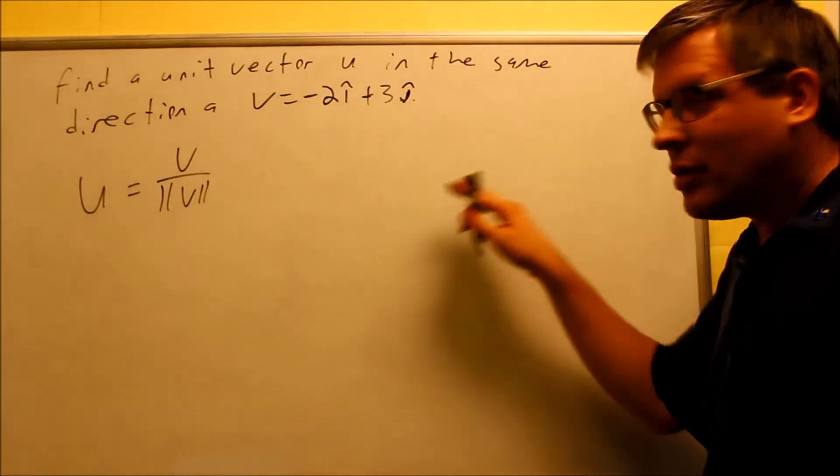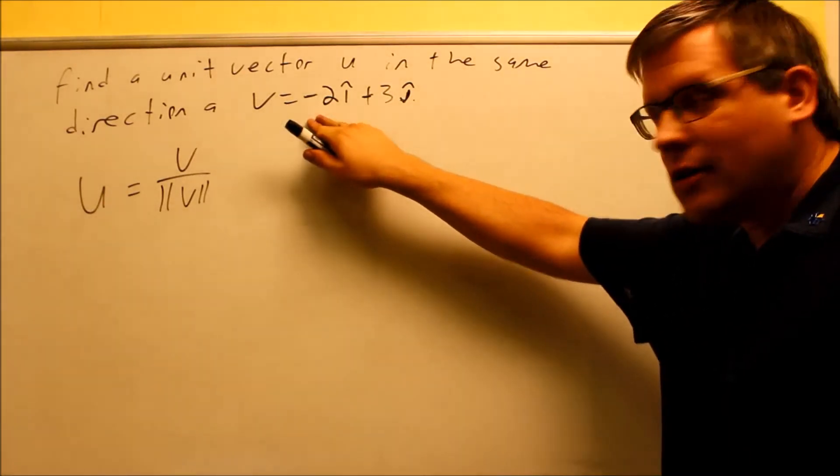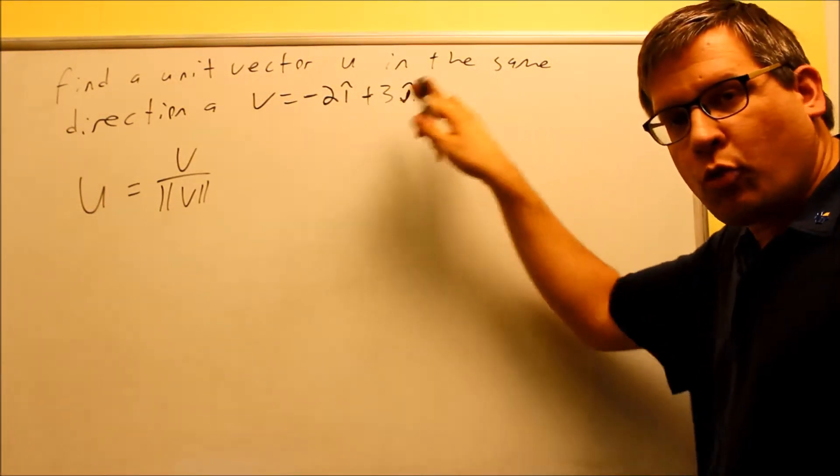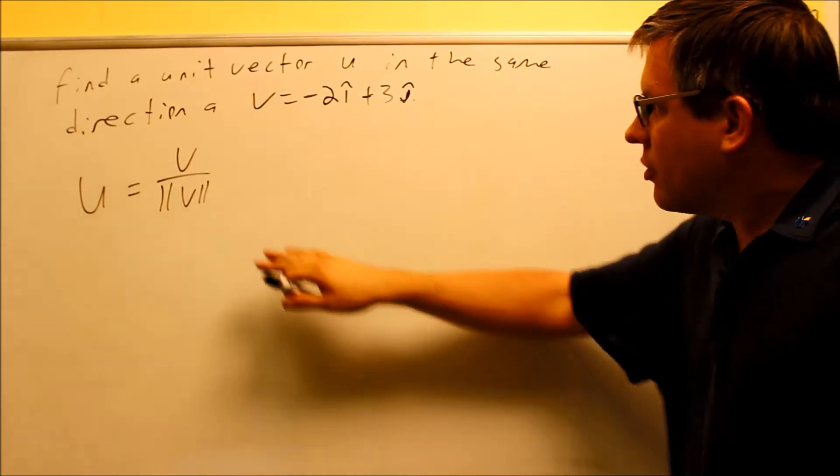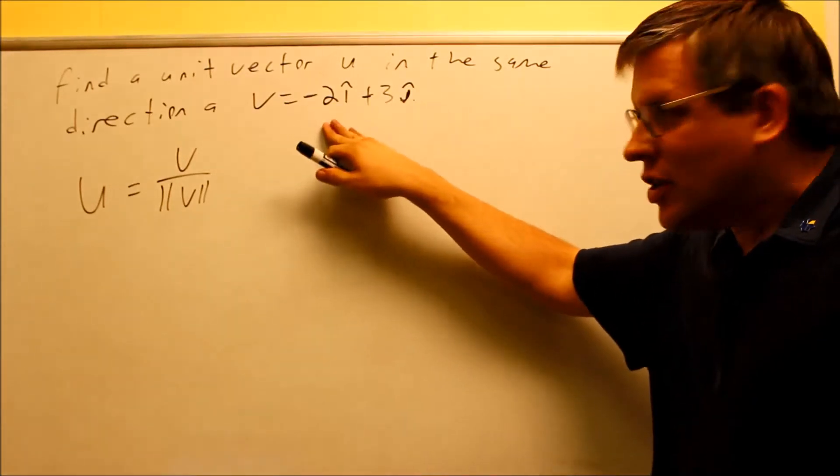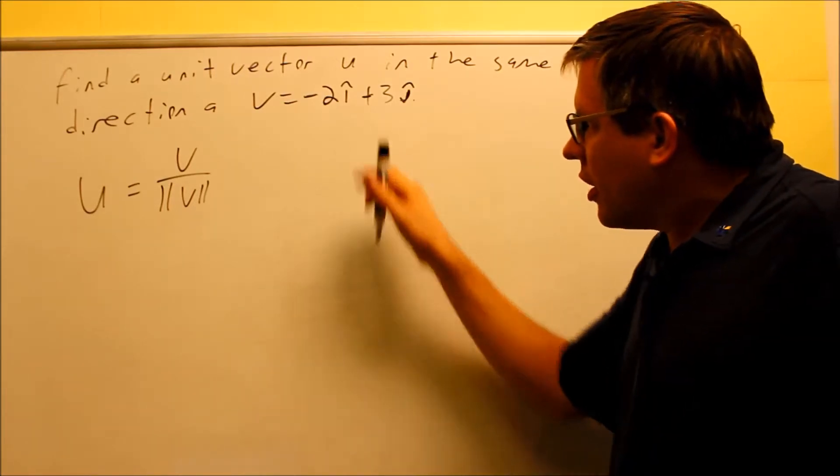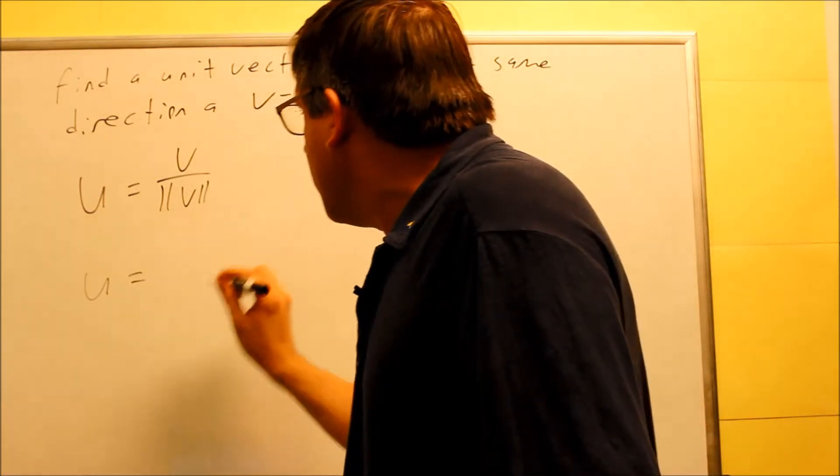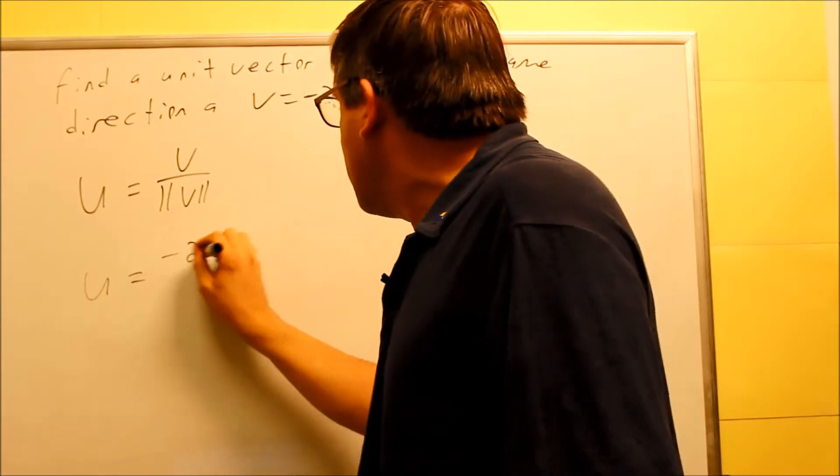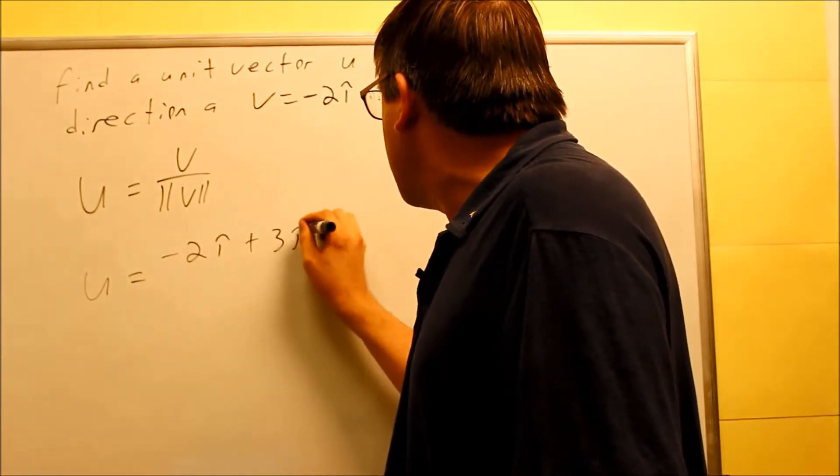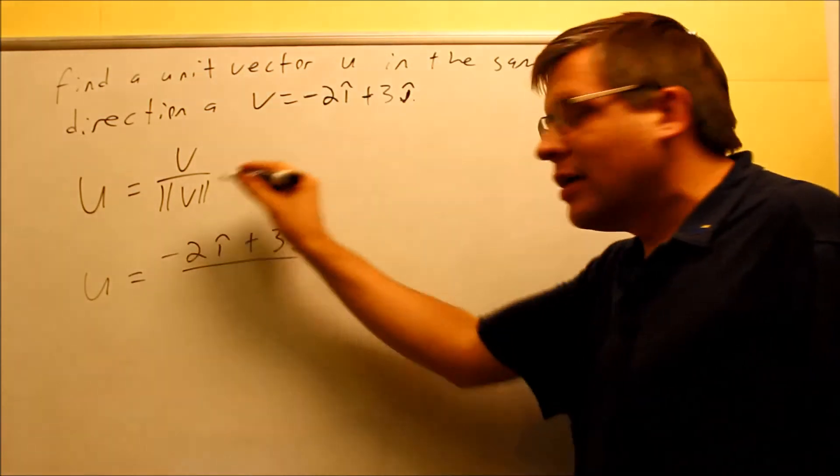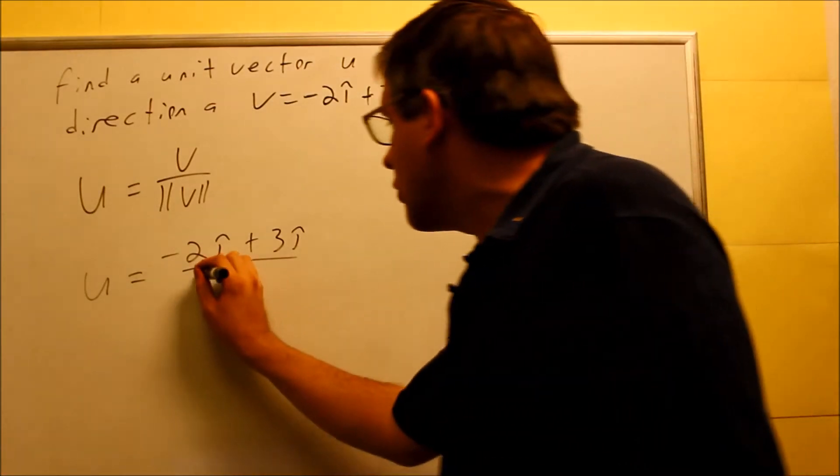Okay, here's the other example. Now we have negative 2I plus 3J. We want to find the unit vector U in the same direction as this V. So recall again, that's the formula that we used. So we'll use it again. Your U is equal to your V is going to be this one, negative 2I plus 3J.